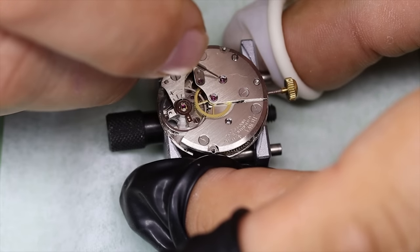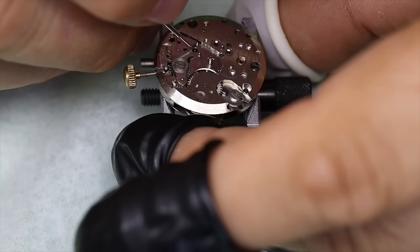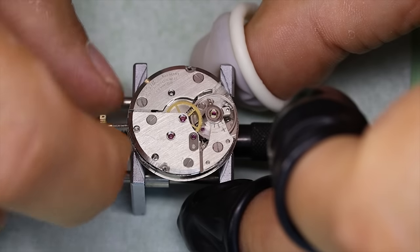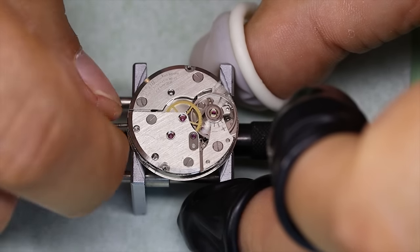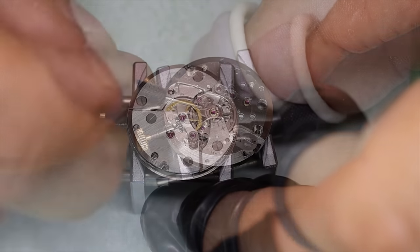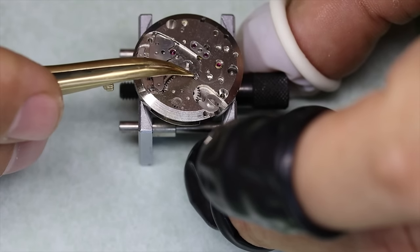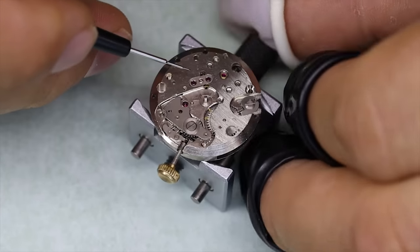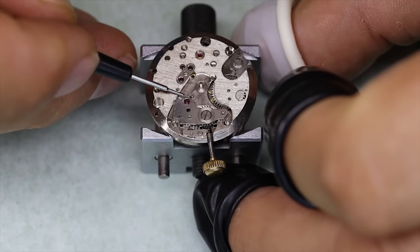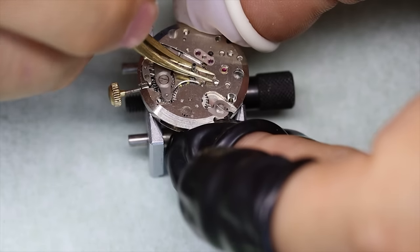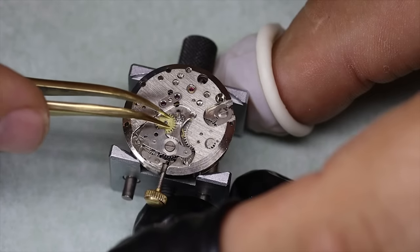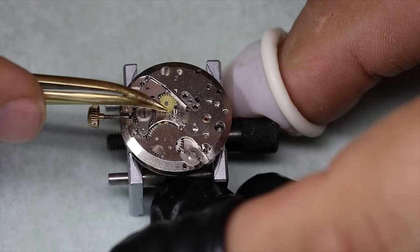So then we can oil the pivots and put in the rest of the keyless works and put it on the time grapher. We should have put the minute wheel in before we put this rocker plate on. We can just loosen it a little bit and sneak it underneath.